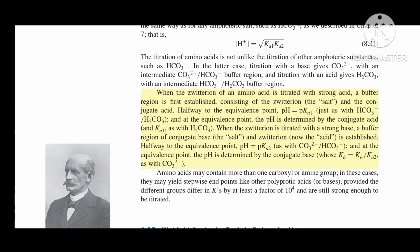When the zwitterion is titrated with a strong base, a buffer region of conjugate base (the salt) and zwitterion (now the acid) is established. Halfway to the equivalence point, pH equals pKa2, as with CO3²-/HCO3-. At the equivalence point, the pH is determined by the conjugate base, whose Kb = Kw/Ka2, as with CO3²-.